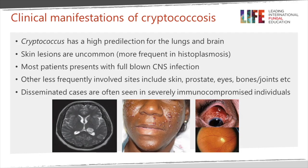Cryptococcal disease particularly affects the lungs and brain. The organism is breathed in and may disseminate to multiple organs, but cryptococcal meningitis is the most common manifestation. Sometimes you can have cryptococcal skin lesions, subcutaneous lesions, and occasionally limited disease to the skin, the prostate, the eyes, the bones or the joints, or a combination of those.